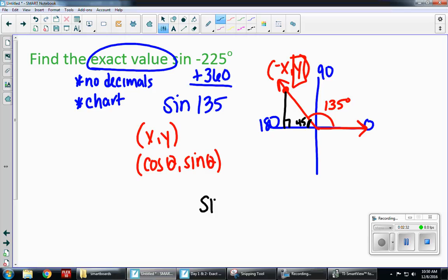So the sine of 45, and I know that it's going to be positive, is going to be my answer. So from your chart, your sine of 45 is radical 2 over 2.